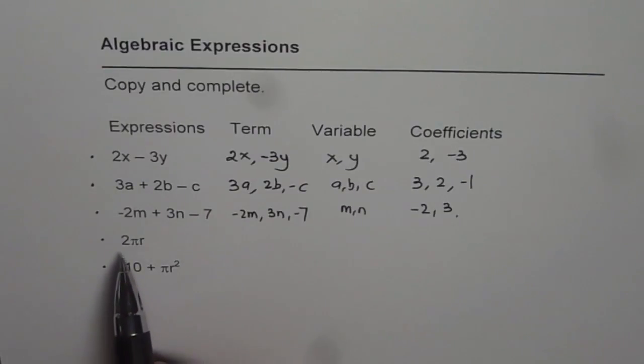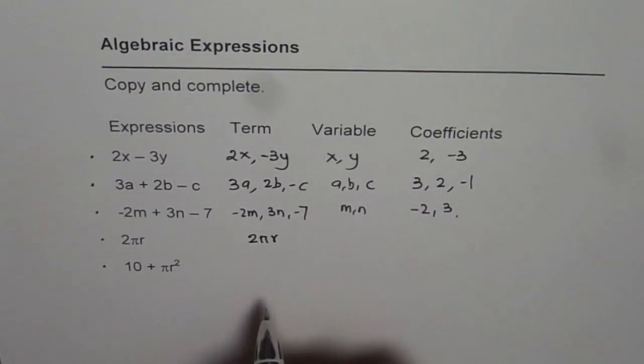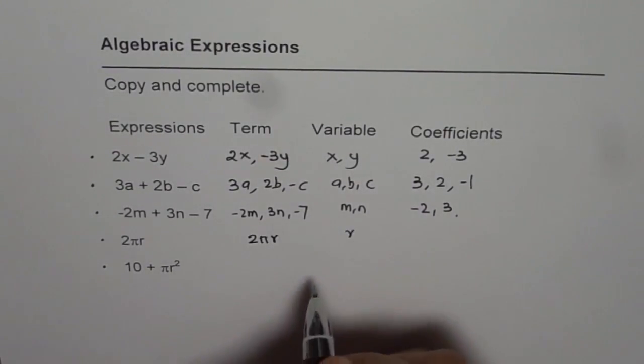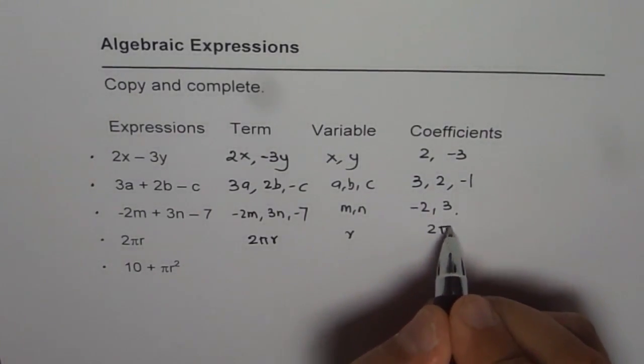The fourth expression is 2 pi r. In this case we have only one term which is 2 pi r. The variable is r and the coefficient is 2 pi. Remember, 2 pi is a number.